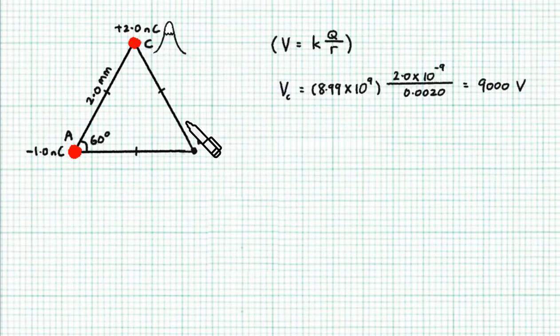Point B is 2.0 mm away from C, so using the formula V equals KQ over R, we can calculate the potential at B due to charge C to be 9,000V.